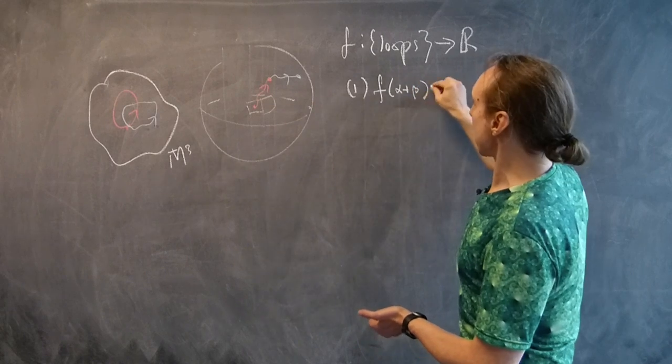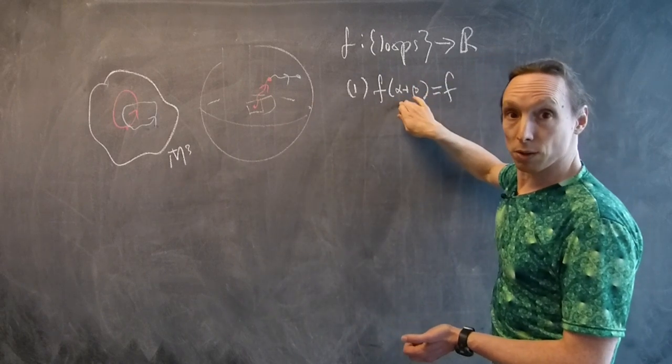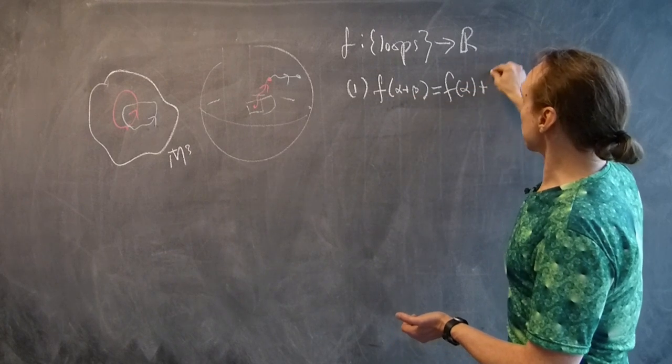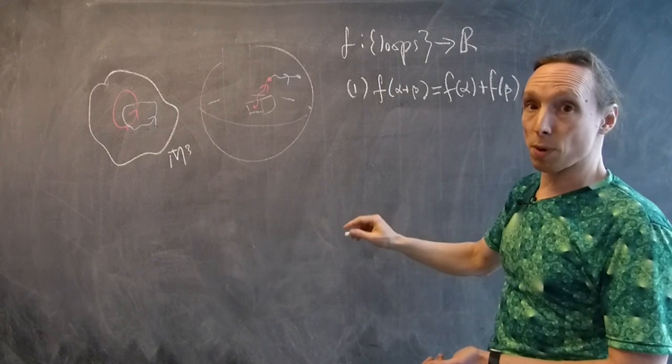then the cohomology class evaluated on the two loops, the sum, has to be the sum of the evaluations. That's the first important property.